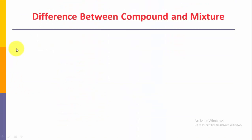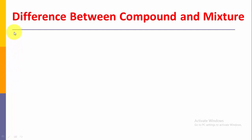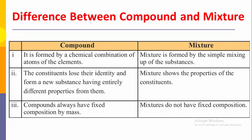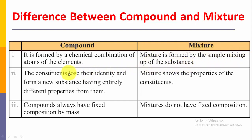So dear students, our main and very important topic, according to the examinational point of view, is the difference between compound and mixture. The first difference is: a compound is formed by chemical combination of atoms of the elements, but a mixture is formed by simple mixing up of substances. When any two substances are mixed in any ratio, they form a mixture.